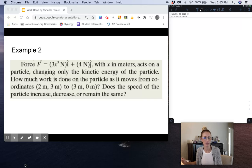How much work is done on the particle as it moves from coordinates 2 comma 3 meters to 3 comma 0 meters? Does the speed of the particle increase, decrease, or remain the same? Since we're finding work done by a variable force, we know that we have to integrate.